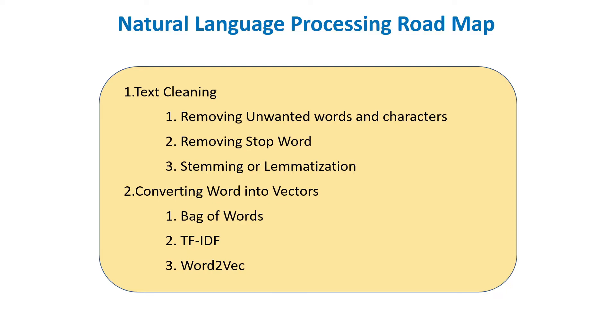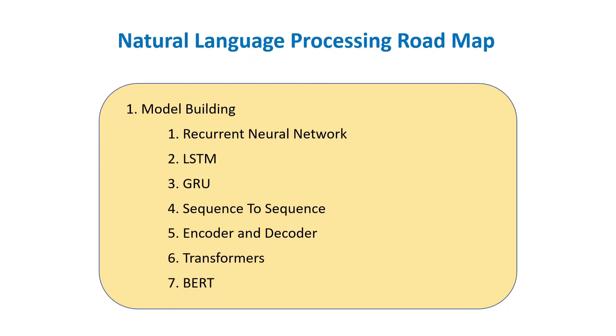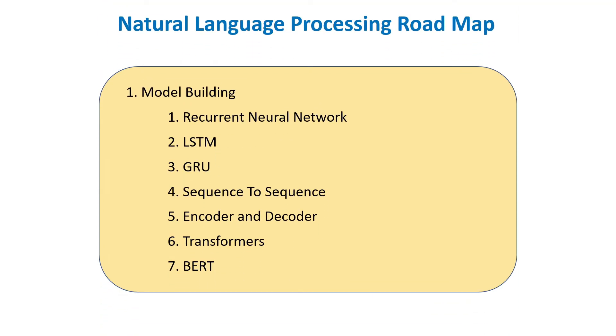To learn natural language processing you should be familiar with deep learning basics. Now let's see the roadmap you should probably follow to learn natural language processing quickly. In natural language processing there are three stages. In stage one we are going to learn how to clean the text. In stage two we are going to learn how to convert words into vectors. In the third stage we are going to learn how to build a model, how to train a model, and how to fine-tune a model using TensorFlow. Before that, we are going to learn the intuition as well as the math behind all of these model and workflow architectures.